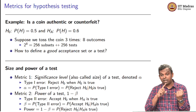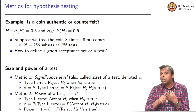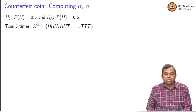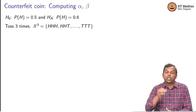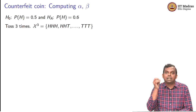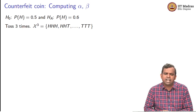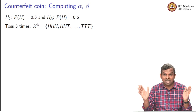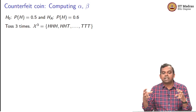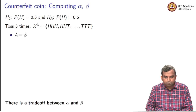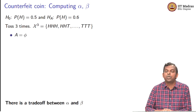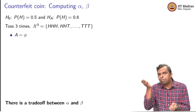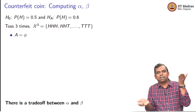You have to make a decision between two things, and you have two numbers — alpha and beta — both of which you want to keep low. If there were only one number, you would just pick the set minimizing it. With two numbers, there is a tradeoff: if you go for very low type 1 error, type 2 error goes up; if you go for very low type 2 error, type 1 error goes up.